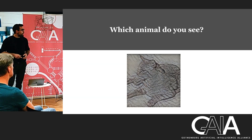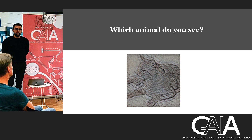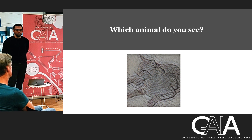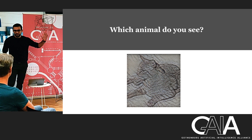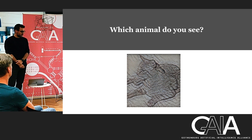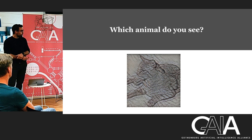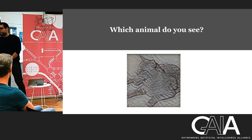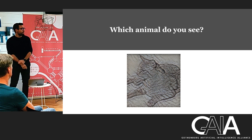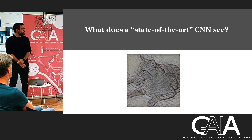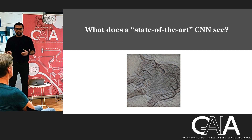I want to start with this image that popped up in my literature a few months ago. The question was pretty simple: what animal do you see when you look at this image? This is not a real naturalistic image — it has been manipulated. But most people, when they look at this image, say that they see a cat. Then the question is, what does a state-of-the-art convolutional neural network see?